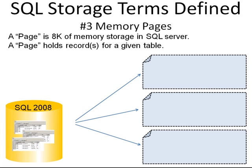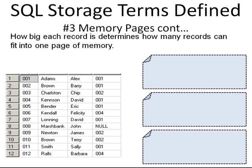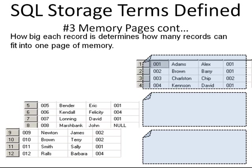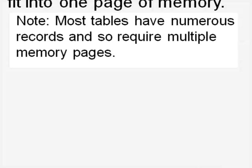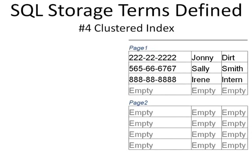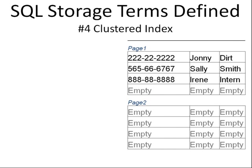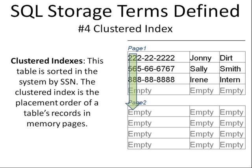A page holds one or more records for a given table depending on how large each row is. For example, let's say four records fit in one memory page — that means 12 records would fill up three memory pages. Most tables have numerous records and so they require multiple memory pages. If we decide to store records in order by social security number, we've set up a clustered index. The clustered index is the placement order of a table's records in memory pages.